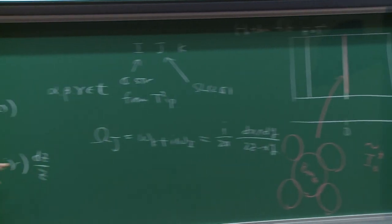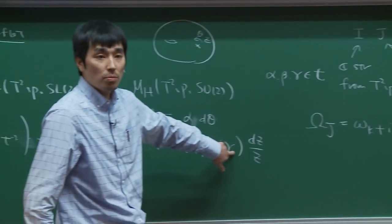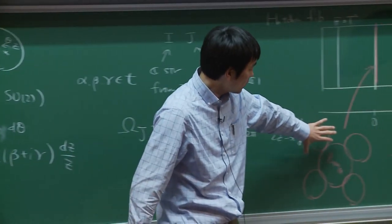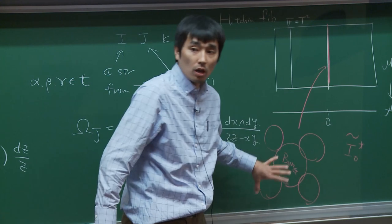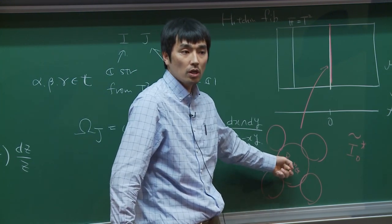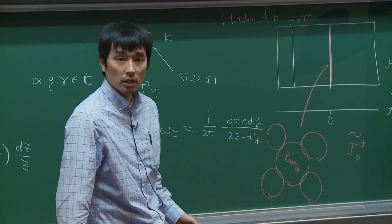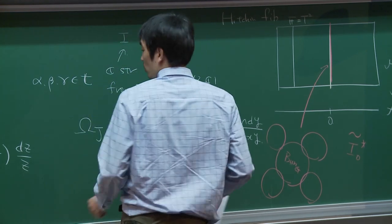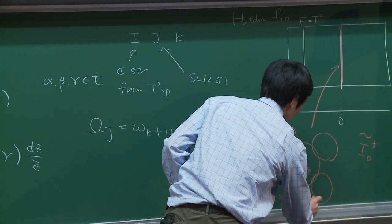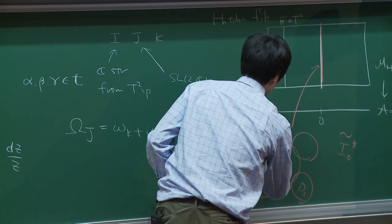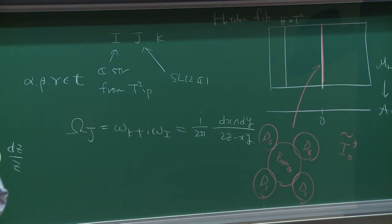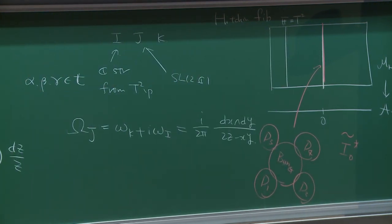When α, β, γ are nilpotent, or if you turn off the tame ramification, the four divisors shrink to a point and you get the original Kummer case T²/Z₂. But if you turn on the ramifications, you have exceptional divisors D1, D2, D3, D4. This is the geometry of the moduli space of flat connections.